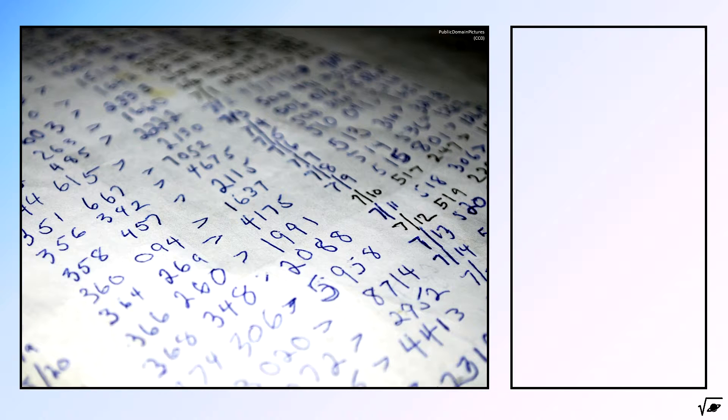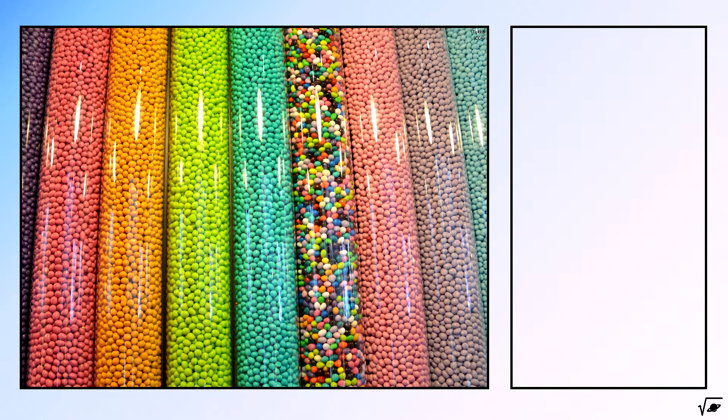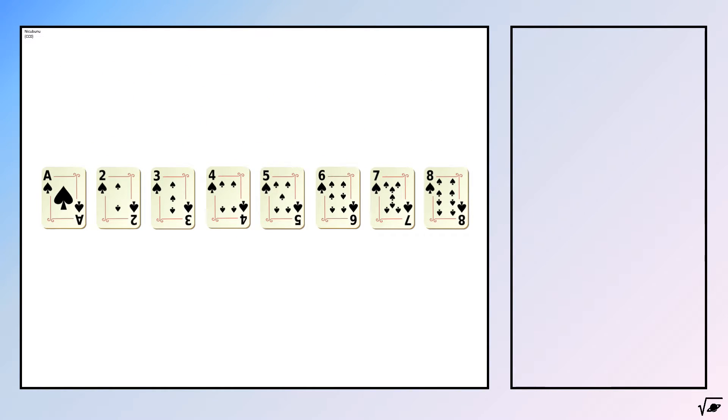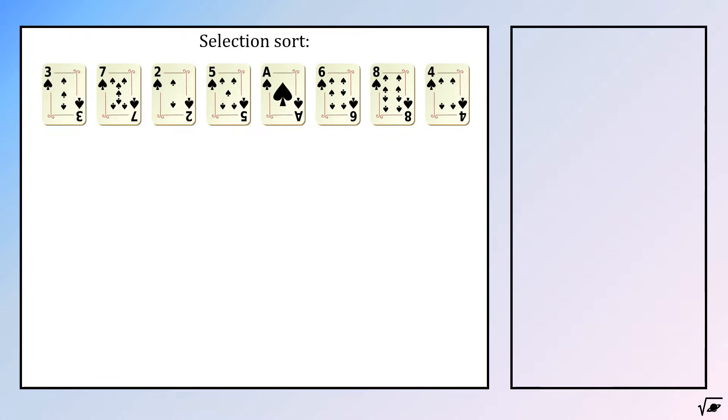Computers use databases for huge amounts of data. Keeping this list sorted is really important for optimizing the speed of a search. But how do computers get a randomly shuffled database sorted? The most straightforward method to do this is probably selection sort.